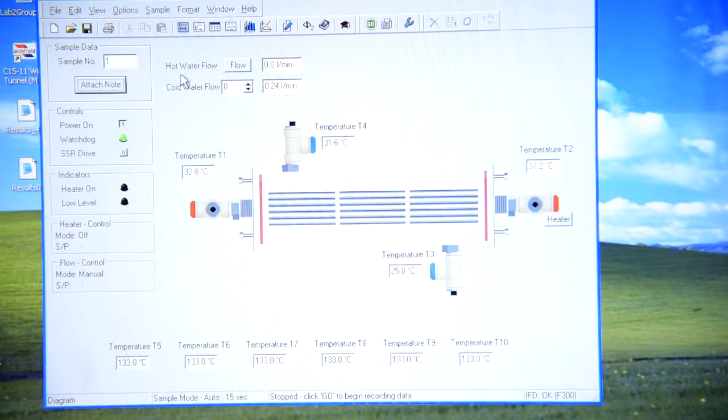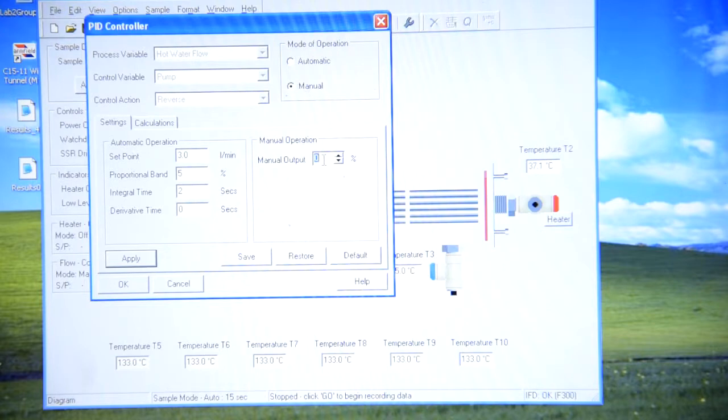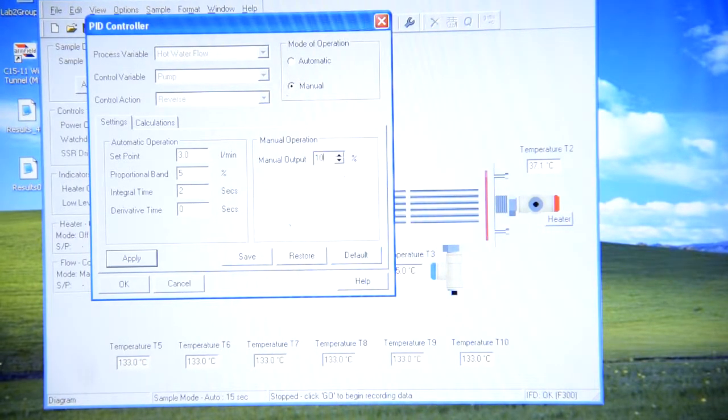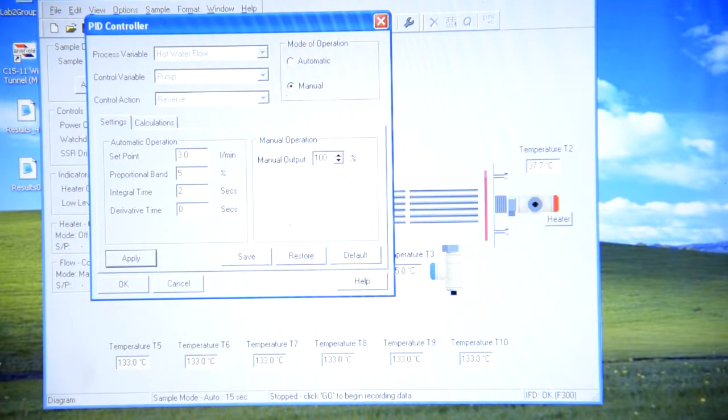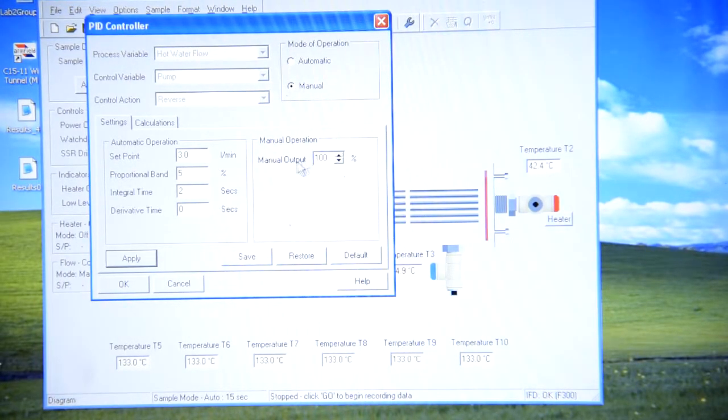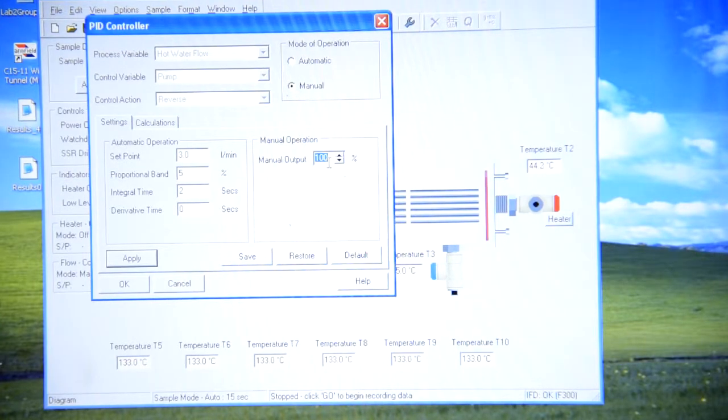Then you should select hot water flow, select manual mode, and input something like 100%. After this, the pump should be working. Then, after checking, you can put zero again.